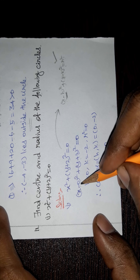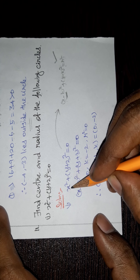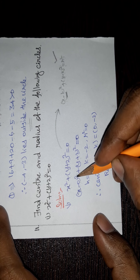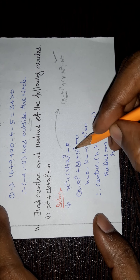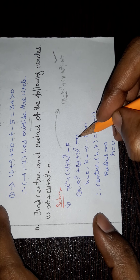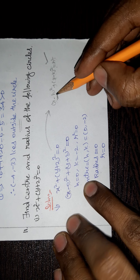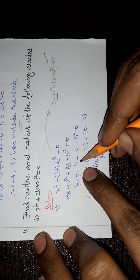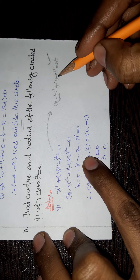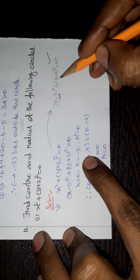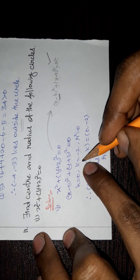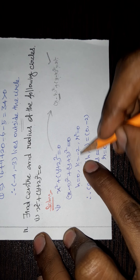So, rewriting: x minus 0 whole square plus y plus 2 whole square equal to 0. Comparing, h = 0 and k = minus 2, since minus (minus 2) gives plus 2.